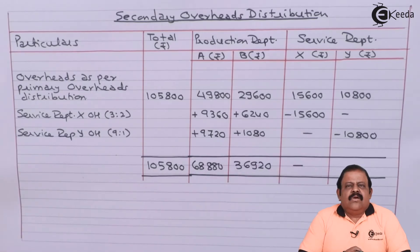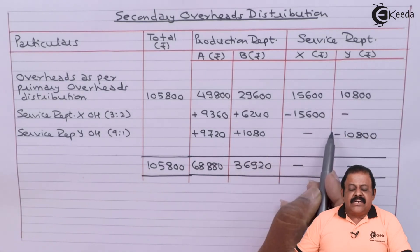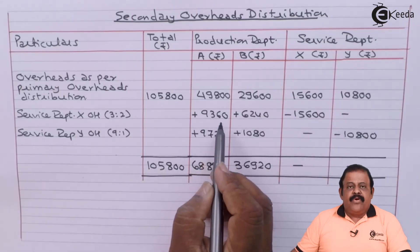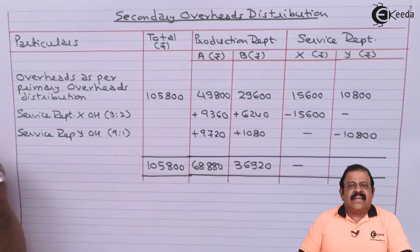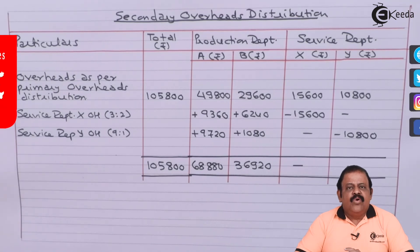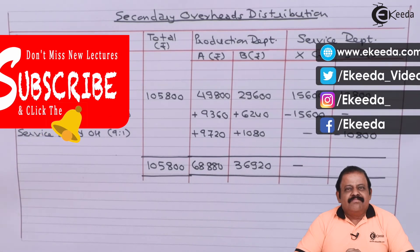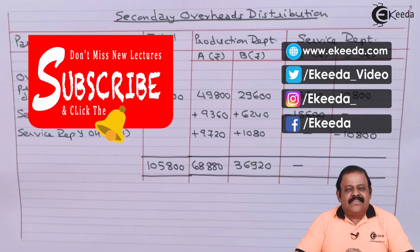Thus, overheads of service departments X and Y are deducted from the service department columns and added to production departments A and B. This is called secondary distribution of overheads. Thanks for watching this video. Stay tuned with Ikeda and subscribe to our channel Ikeda.